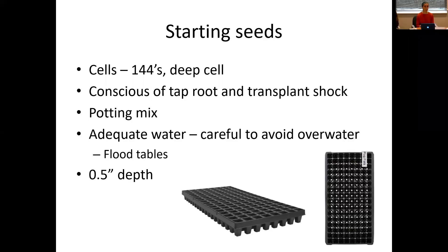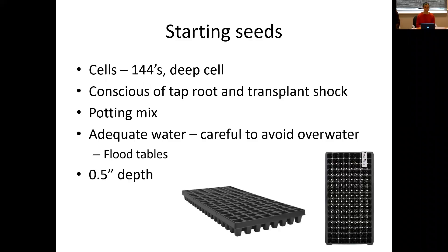Seedlings will want adequate water, and unlike a grain or fiber situation with direct seeding into the field, you get to control that. You want to avoid overwatering — hemp seeds, regardless of whether you're producing CBD, grain, or fiber, are susceptible to wet soil. It likes water, like anything that could germinate, but not too much. You can use flood tables or a hose, whatever your operation looks like. Planting depth is less critical when using transplant trays with 144 cells, but 0.5 inches would be the deepest to plant.